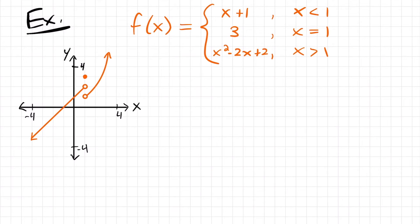Welcome back. We're going to look at some more examples dealing with continuity. We'll start with this piecewise function here. You'll see we have three different parts: x plus 1 for x values less than 1, 3 for when x is equal to 1, and this quadratic for when x is greater than 1.